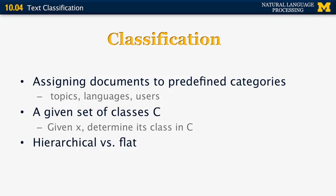There are many different ways to do classification. The first important distinction is whether you want to do hierarchical versus flat classification. In hierarchical classification, you have a more general topic — for example, business — and within business you have subcategories such as finance and management. In flat classification, you just have one set of categories that is not hierarchical.